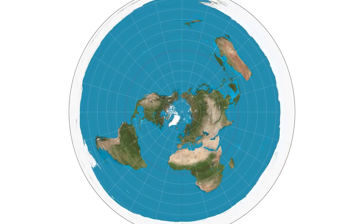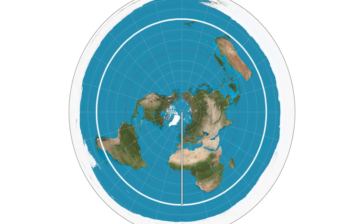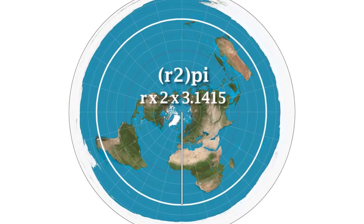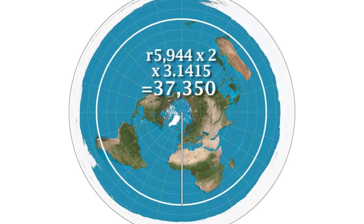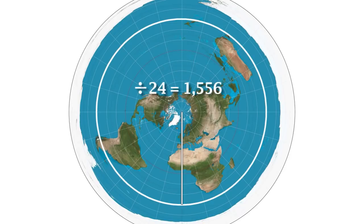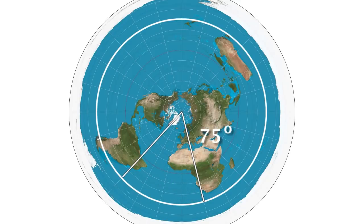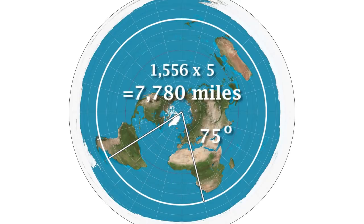On the flat Earth map, if we measure a radius from the center of the map to 45 degrees southern latitude, it is 5,944 miles. To find the circumference, the equation is radius times 2 times pi. The circumference at this latitude is 37,350. Divide by 24, you get 1,556 miles. Multiply that by 5, and you have 7,780 miles. That's quite a distance.